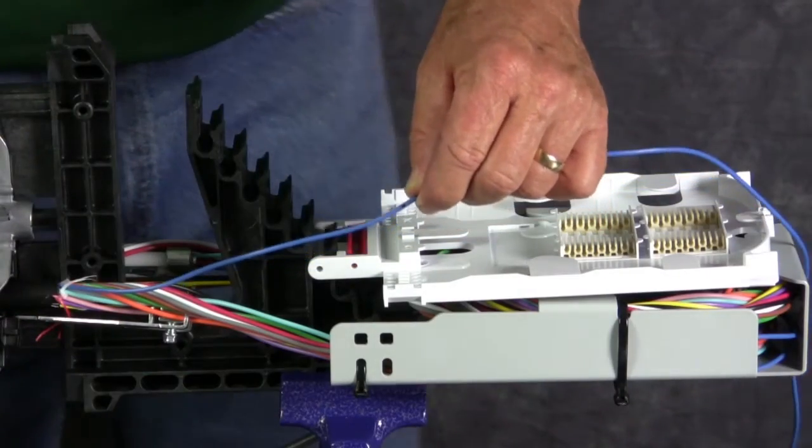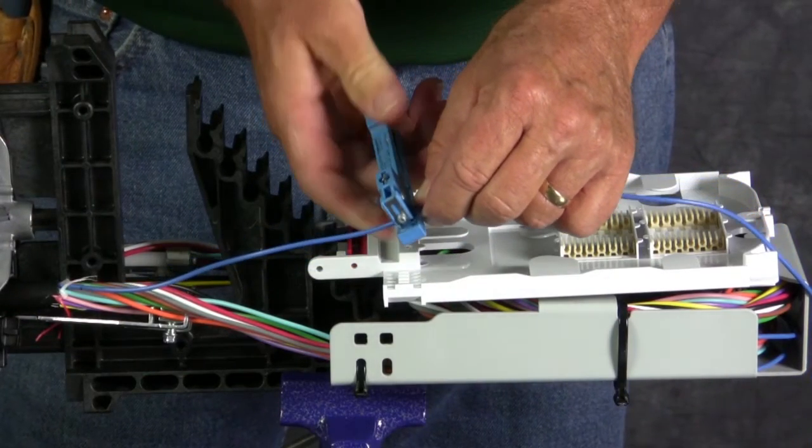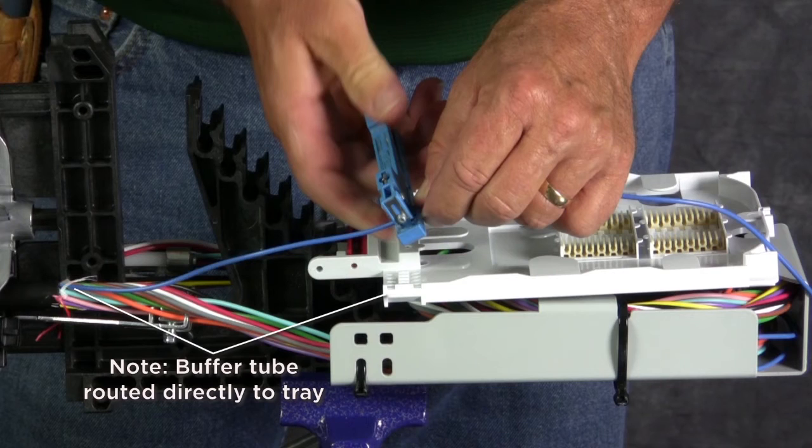One of the benefits of hinging trays is the ability to route the buffer tubes directly to the tray in the event of fiber breakage or insufficient slack.